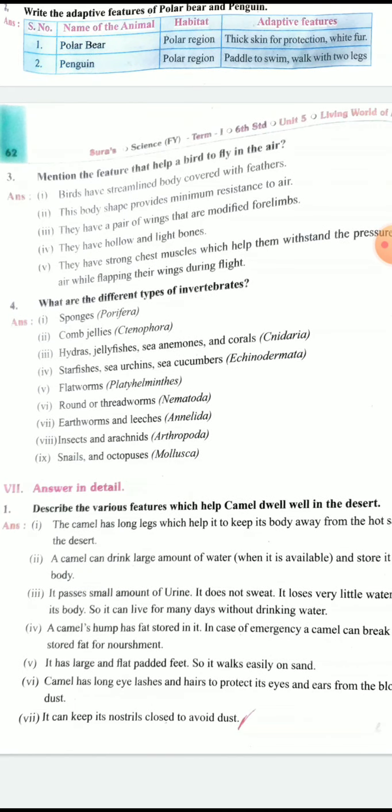Third question: Mention the features that help a bird to fly in the air. First point: Birds have streamlined body covered with feathers. This body shape provides minimum resistance to air. Third point: They have a pair of wings that are modified forelimbs. Fourth: They have hollow and light bones. Fifth point: They have strong chest muscles which help them withstand the pressure of air while flapping their wings during flight.